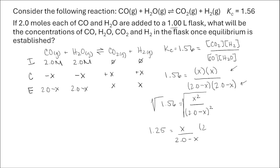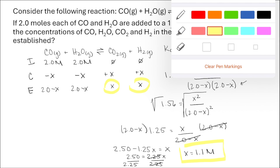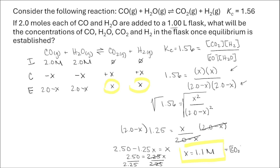I'll multiply each side by (2 − x), giving 2.5 − 1.25x = x. Combining like terms and solving for x gives x = 1.1 molar. Going back to the ICE chart: the concentration of both CO2 and H2 at equilibrium equals x, so both are 1.1 molar. The concentration of CO and H2O both equal 2 minus x, so 2 minus 1.1, giving 0.9 molar.